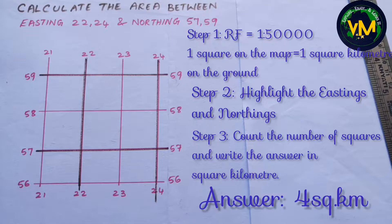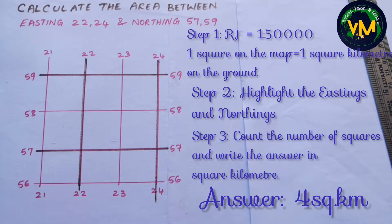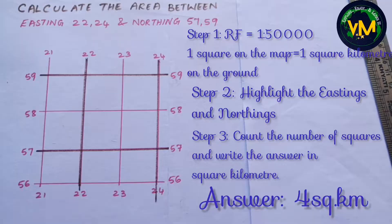Even if your answer is right, if you forget to write the answer in units — that is square kilometer or kilometer square — you will get zero. No units means no marks. So do not forget to write the units for the exam.